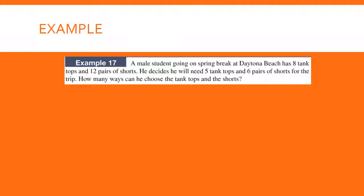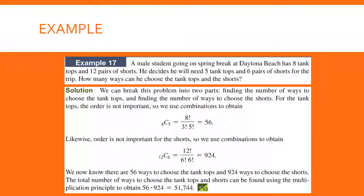Try this example — pause the recording, give it a try, and resume to check your answer. We break it into two parts: first, find the number of ways to choose tops, then shorts. For tops we get 56, and for shorts we get 924 — these are combinations, so order doesn't matter. By the multiplication principle, the complete number of combinations is 56 times 924, which is 51,744.